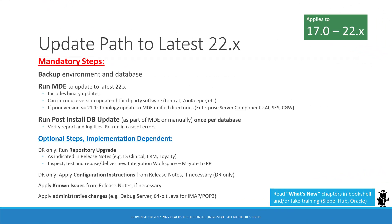With Siebel 22.1 publicly available, what are the update paths to the latest release? The good news is that nothing has really changed from previous releases such as 21.12. Siebel 22.1 is merely a monthly update in the continuous release model of Oracle, so it's only the successor to 21.12, not an entirely new product.